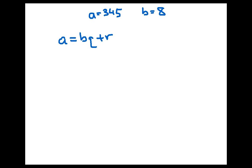For example, and this is our first example we saw of this, if a equals 345 and b is 8, then we can write 345 equals 8 times 43 plus 1, and that indicates that 8 goes into 345 forty-three times with a remainder of 1.